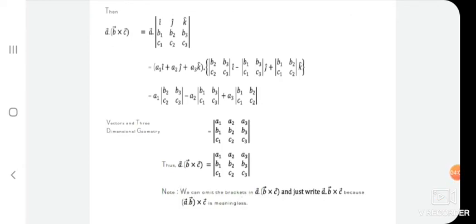So a·(b×c) = a1·|b2,b3;c2,c3| − a2·|b1,b3;c1,c3| + a3·|b1,b2;c1,c2|. Multiplying out gives us a·(b×c) equal to the determinant of [a1, a2, a3; b1, b2, b3; c1, c2, c3].